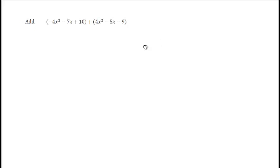Now we're going to add these two polynomials. Again, look in front of the parentheses to see if there's a sign. If the sign is not there, it's implied to be a positive, so you can drop the parentheses. The second set of parentheses also has a plus sign. Since it's positive, we can drop the parentheses. That will give us minus 4x squared minus 7x plus 10 plus 4x squared minus 5x minus 9.